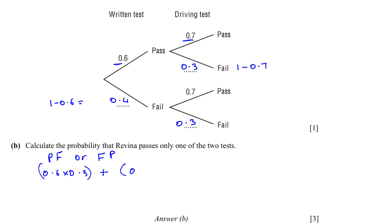So it's 0.4 times 0.7, which will give us 0.46. So that's our answer.